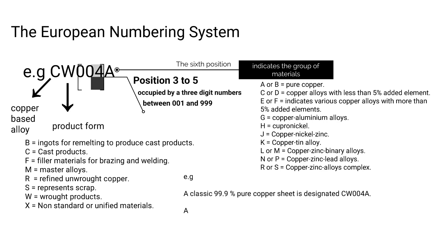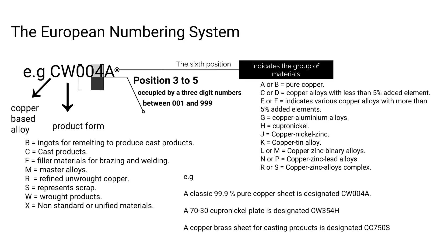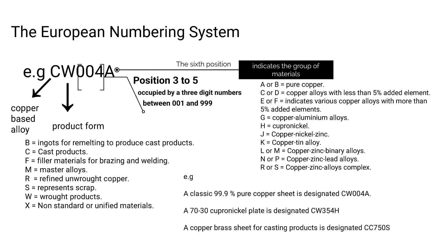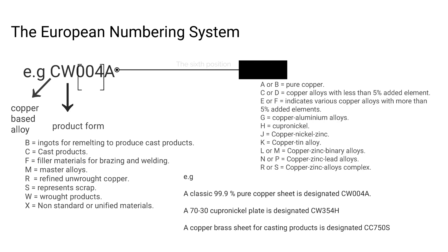Examples: 1. A classic 99.9% pure copper sheet is designated as CW004A. 2. A 70-30 cupronickel plate is designated CW354H. 3. A copper brass sheet for casting products is designated CC750S.